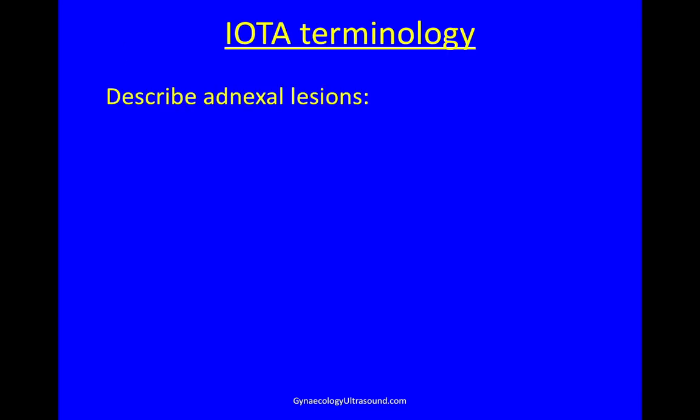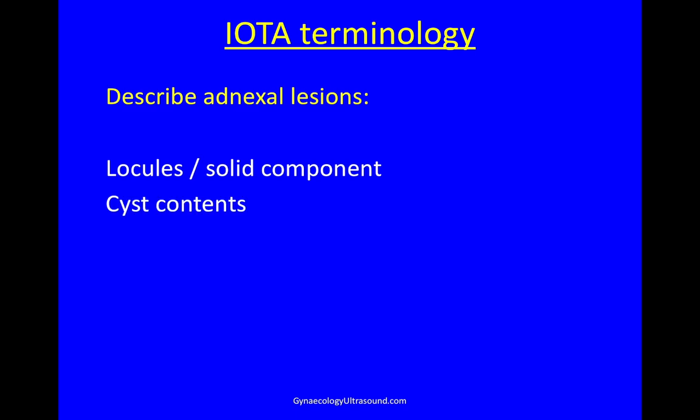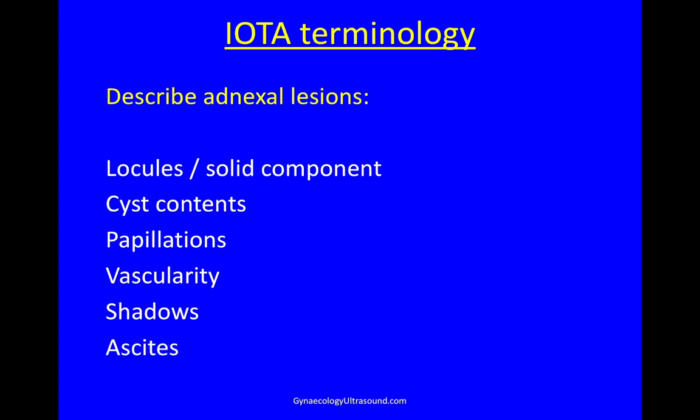In the terminology we describe an adnexal lesion according to how many locules there are, if there's a solid component, what the cyst contents look like, if there are any papillations, what the vascularity is like, and the presence of shadowing and ascites.